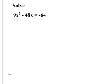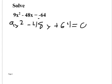Now solve 9x² - 48x = -64. Make one side zero by adding 64 to both sides: 9x² - 48x + 64 = 0. This is a perfect square trinomial — the first term is a perfect square, 64 is a perfect square, and the middle term: square root of 9 is 3, square root of 64 is 8, 3 times 8 is 24, times 2 is 48. Confirmed perfect square.